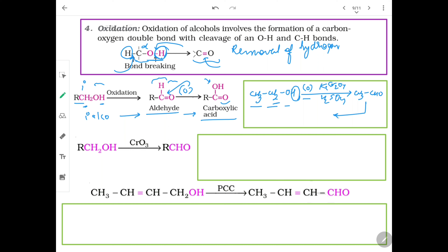Now oxidation of this aldehyde again: the same reagent provides nascent oxygen. Adding nascent oxygen to CH3CHO gives acetic acid, which is ethanoic acid. A two-carbon alcohol gives a two-carbon aldehyde and a two-carbon acid — no change in the number of carbon atoms. One more oxidizing agent: CrO3 (chromic acid) can also be used for oxidation with similar action. So primary alcohol on oxidation always gives aldehyde.